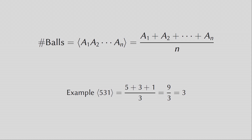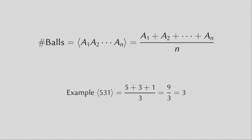Siteswaps have a very cool property. If you want to know how many balls you need to juggle a siteswap, you just take the average — you sum up all the numbers of the n-throws and divide by the pattern length, and you get the number of balls. Let's check this for five, three, one: five plus three plus one gives nine, divided by three gives three. And yes, five, three, one was a three-ball trick.